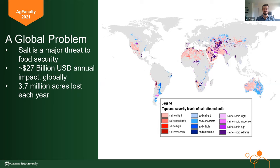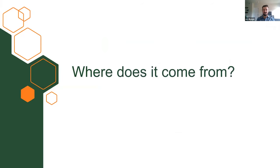If you look at this map, every place that has a color on it that isn't gray is hindered by salt, meaning plants can't grow there as well as they normally would. This is causing significant damage to crops and yields annually, worth about $27 billion that could be saved if we better managed our salts. Even more importantly, 3.7 million acres become unusable every year. As deficit irrigation and limited water resources reduce our ability to irrigate fully, we have to be very careful because salts accumulate when there's not enough water.